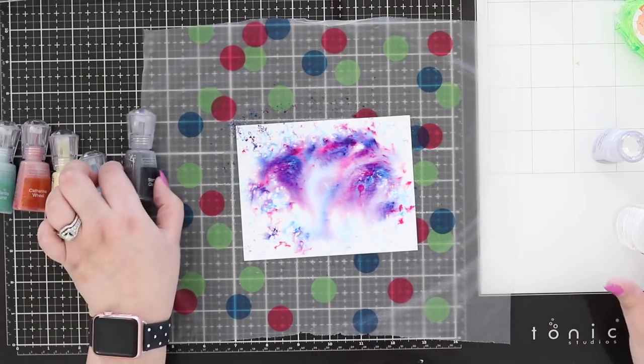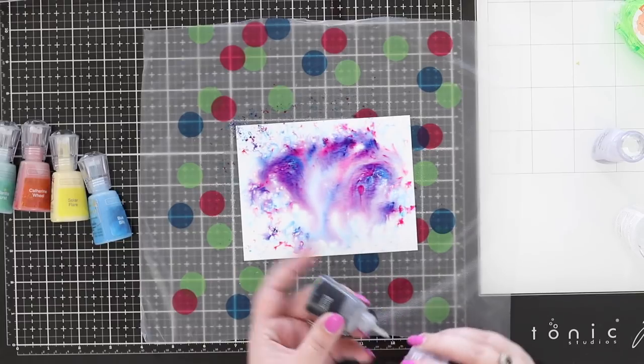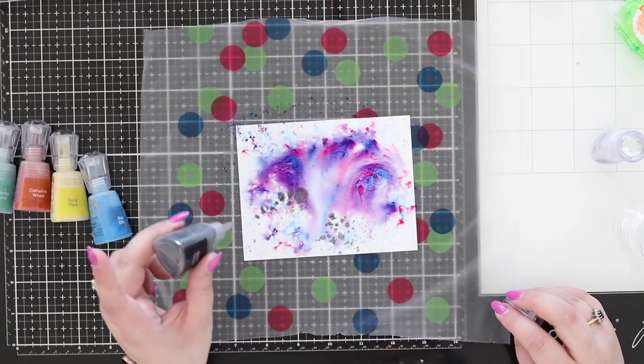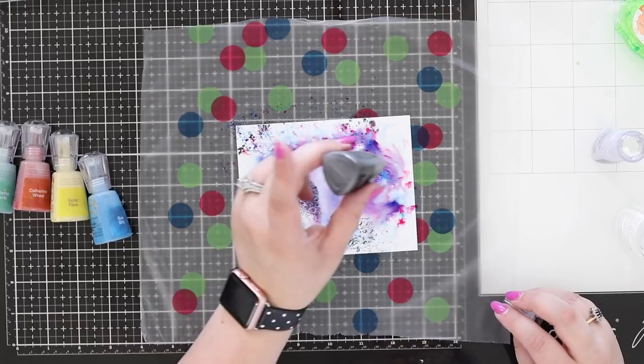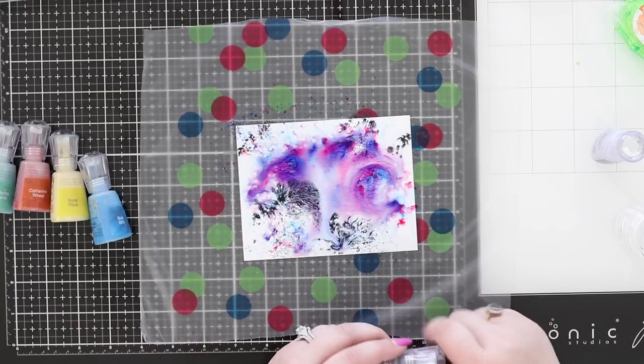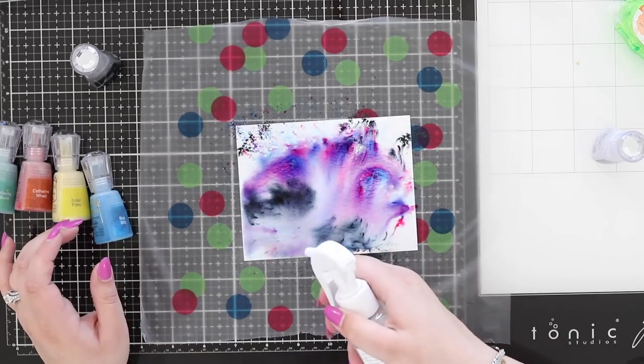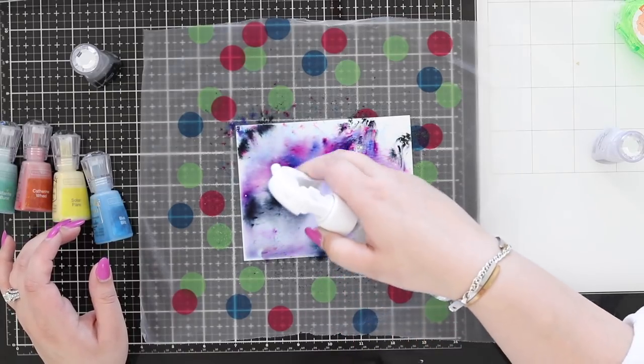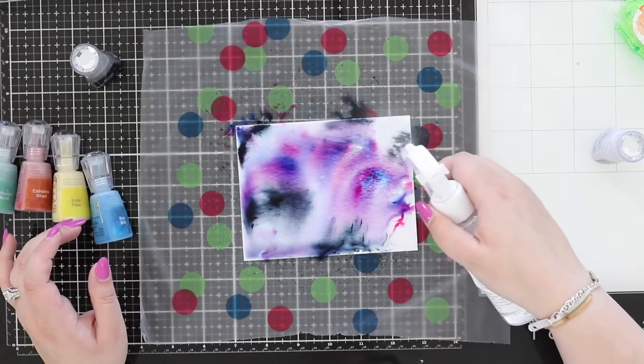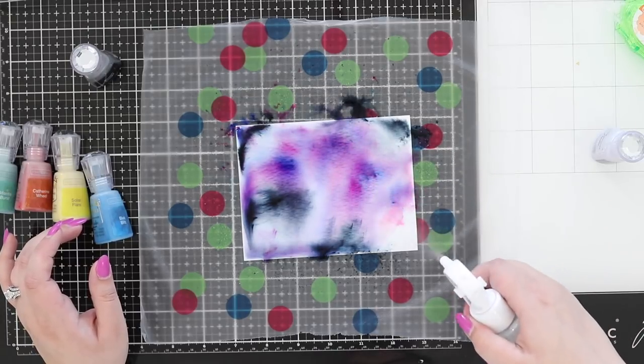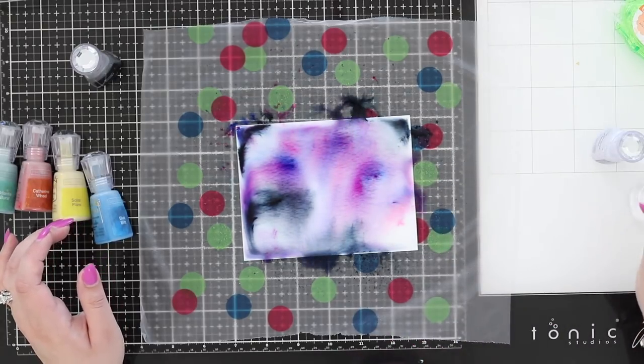You could also add in a little bit of the black. It's only going to go where there is water, so it's going to be activated by you adding water or already having water there. I can spritz my water to make it move into the corners. The more water you add, the lighter the colors you're going to get.